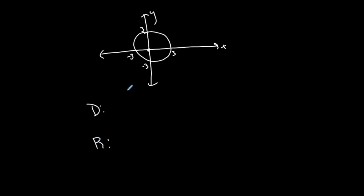First, is this a function? If it's a graph, I use the vertical line test. If I draw a vertical line along this graph, notice it crosses two points on the graph at any point along the circle. Because it doesn't pass the vertical line test, this is not a function. But I can still find the domain and range of any relation or function.